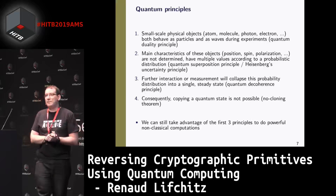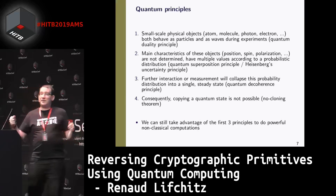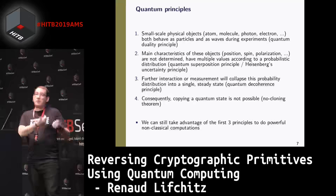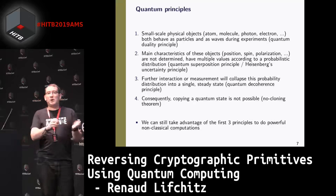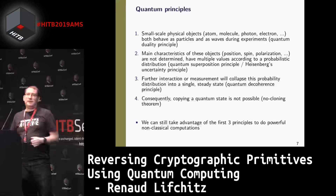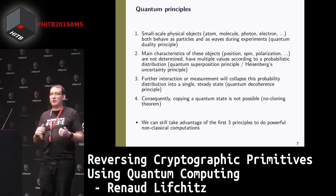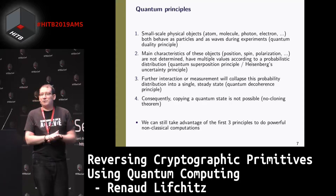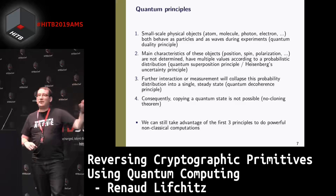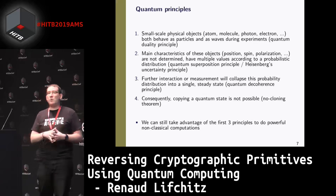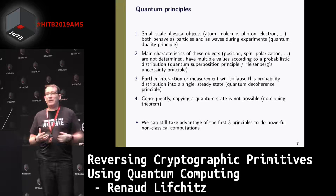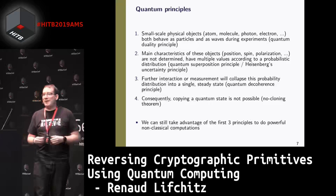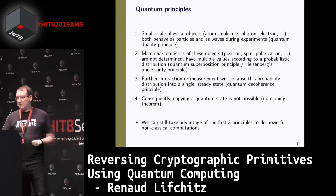Consequently, it's not possible to measure physical properties of a particle and copy them into another one — this is the no-cloning theorem, which can be proven. Strangely, you can take these constraints into account and define a way to do powerful computations using them.